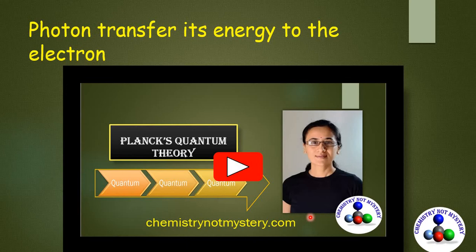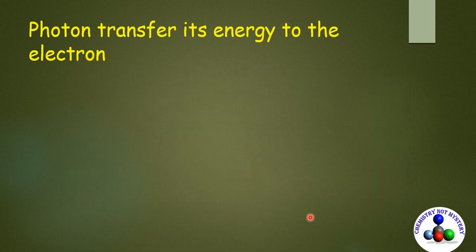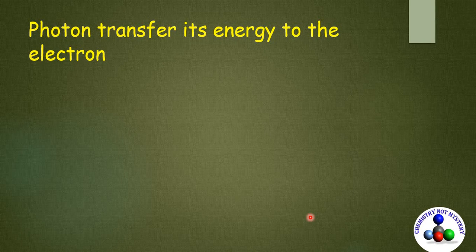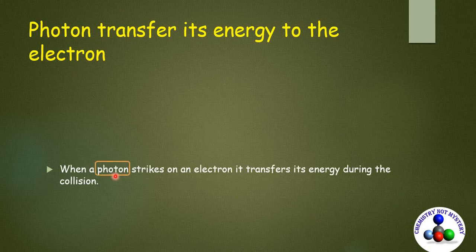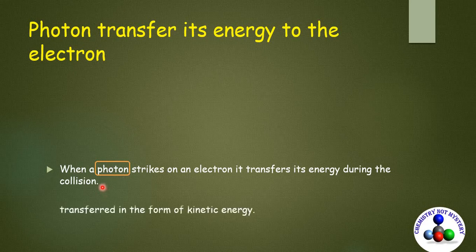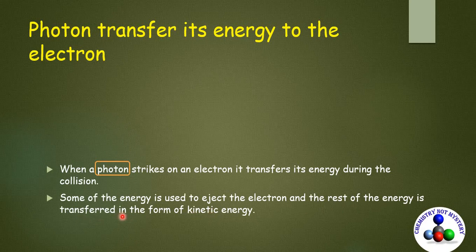Hertz considered the particle nature of electromagnetic radiation. He used the word photon that refers to a particle having one quantum of energy. So photon and quantum both are the same. When a photon strikes on an electron, it transfers its energy during the collision and some of the energy is used to eject the electron and the rest of its energy is transferred to the electron in the form of kinetic energy.